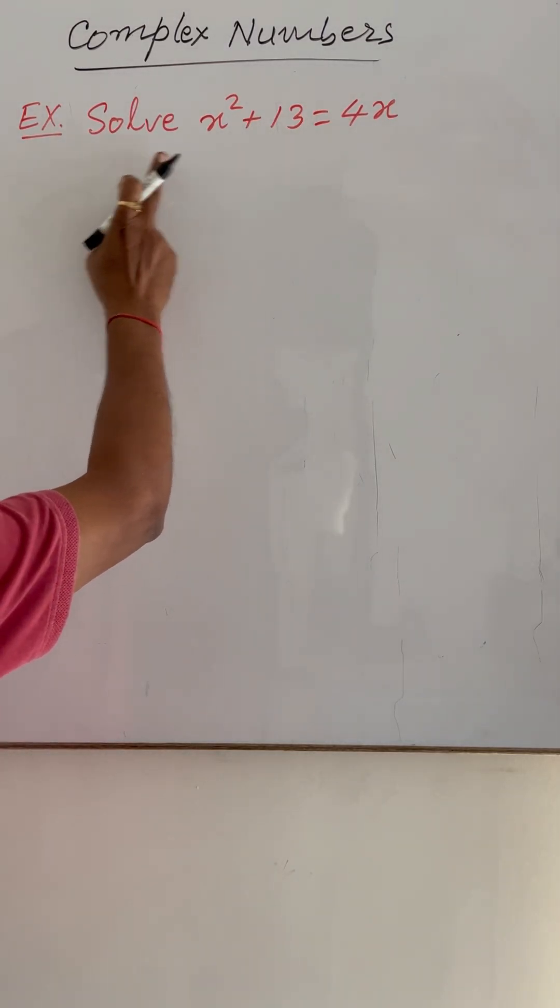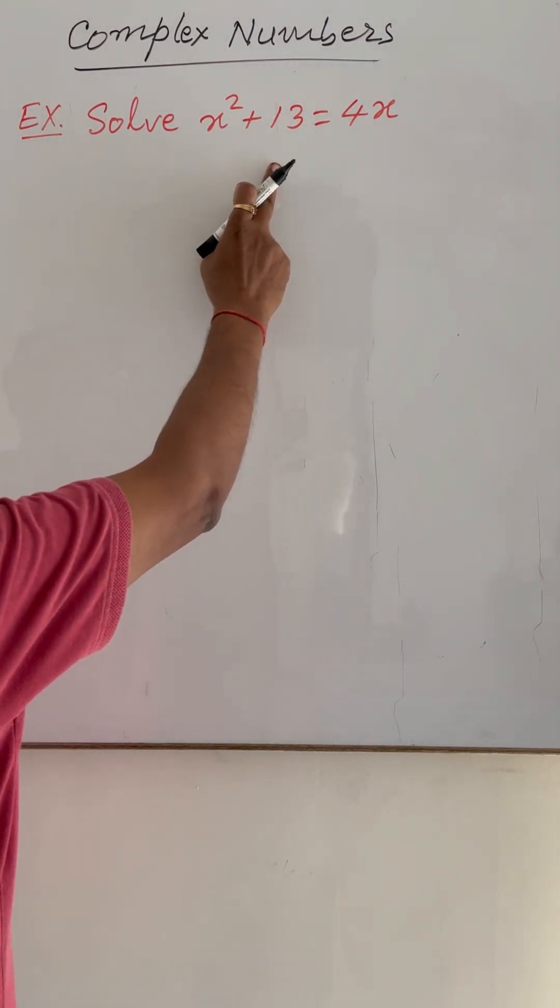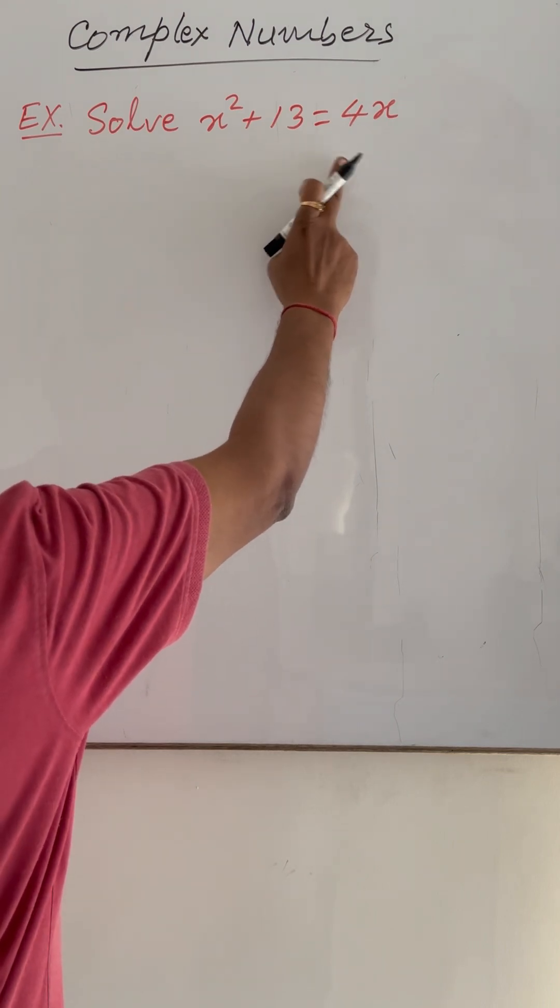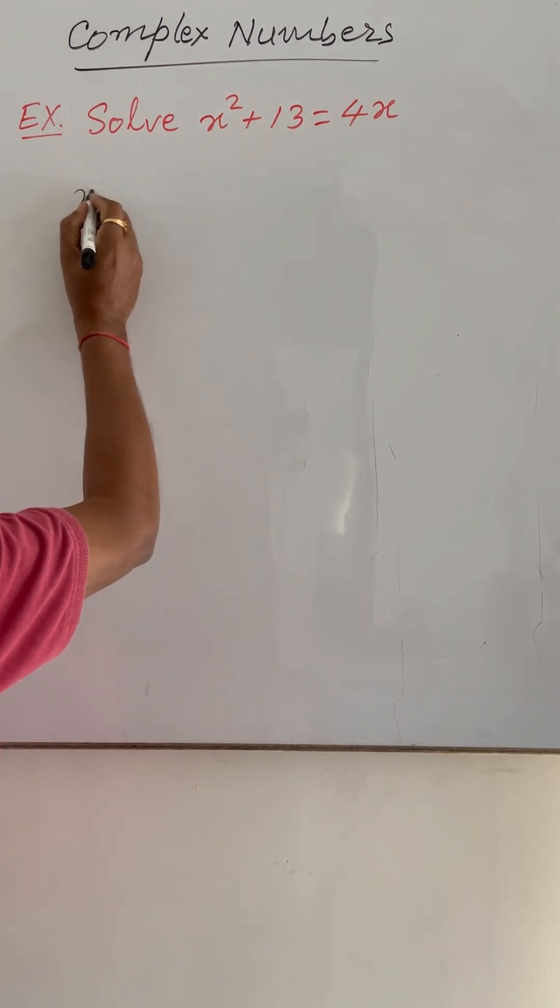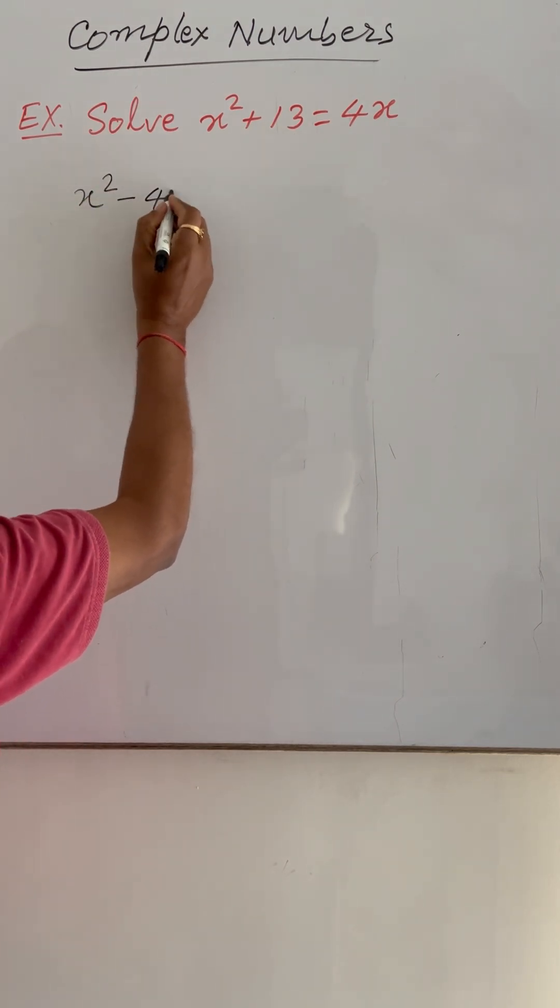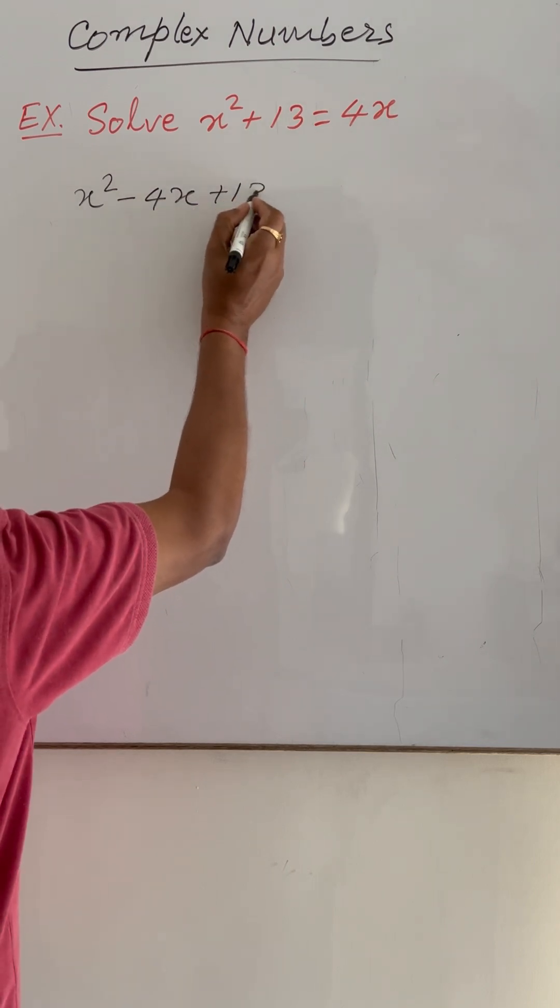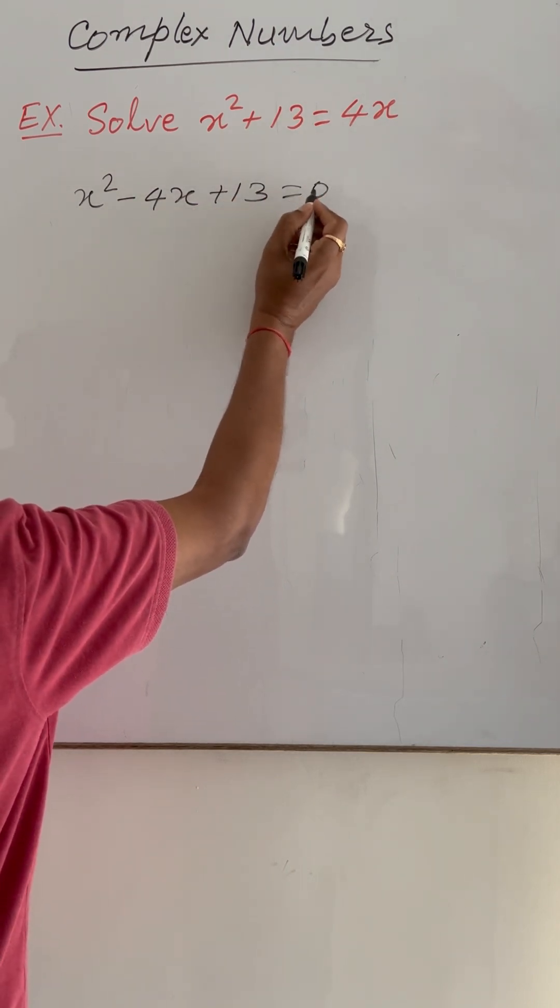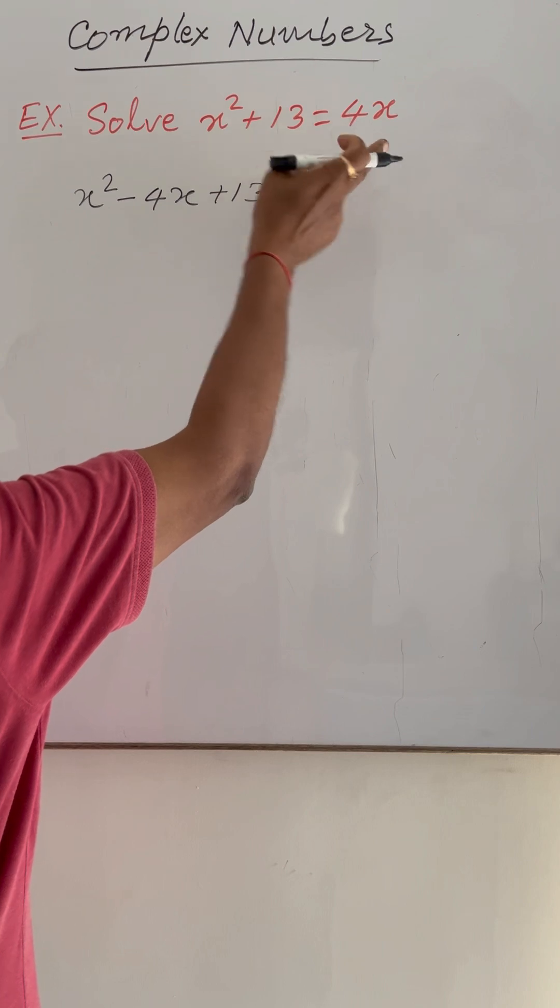Here we have to solve x square plus 13 is equal to 4x. This can be written as x square minus 4x plus 13 is equal to 0. We are transposing 4x to the left side.